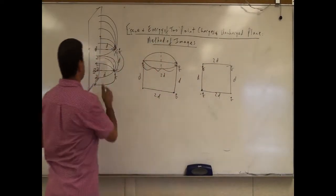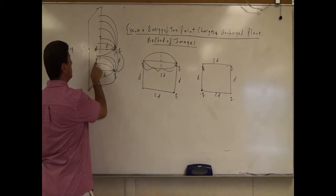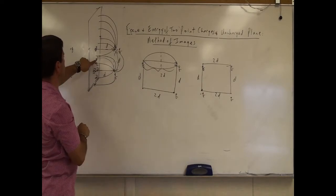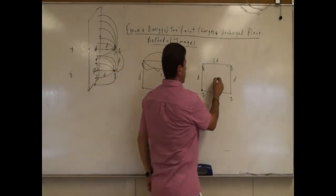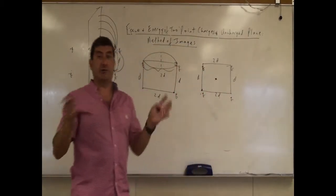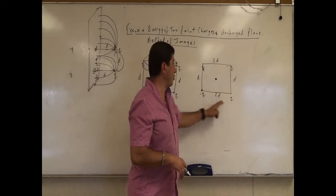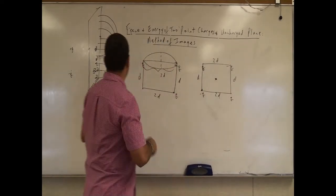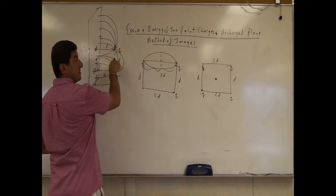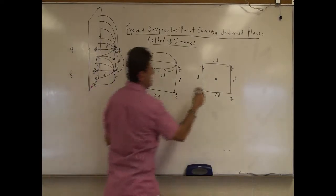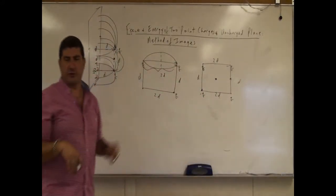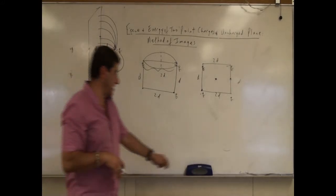Now we can ask all kinds of questions about this situation. What is the force on one of the charges — say negative Q — due to Q and the plane? What's the total potential energy of the system? What's the total electrical field at the middle of the plane created by these two charges? What's the total potential created by all four image charges? We can ask any of these questions using the image charge configuration.